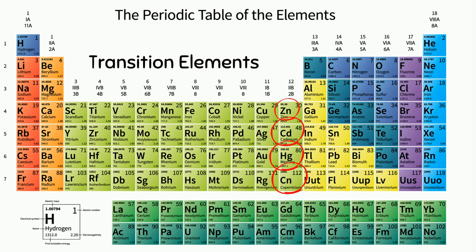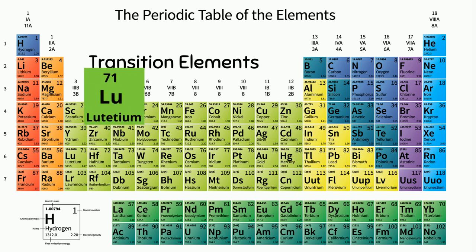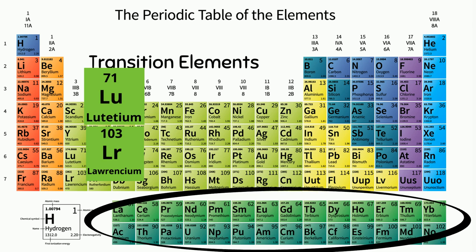Copernicium should probably be excluded as well. However, most people include these elements in the transition metal list. Some people exclude elements 71 and 103 from the list, and there are even scientists and educators who include the full lanthanide and actinide series as transition metals.